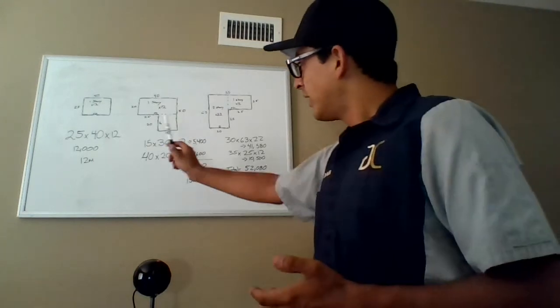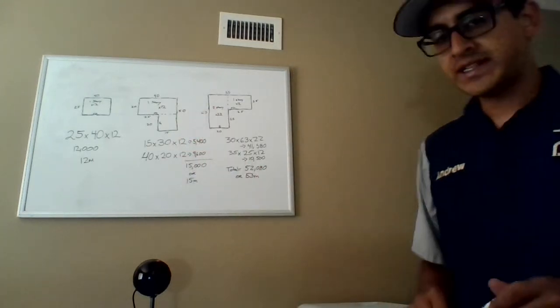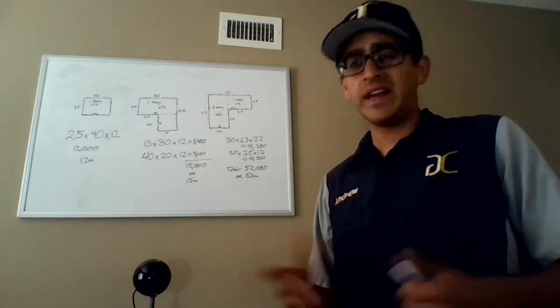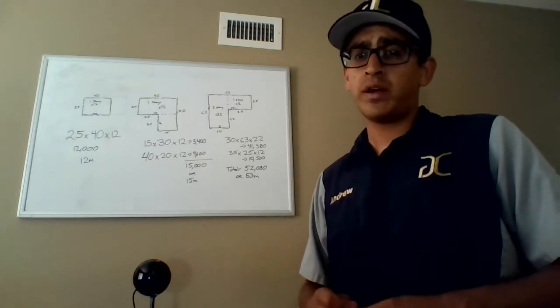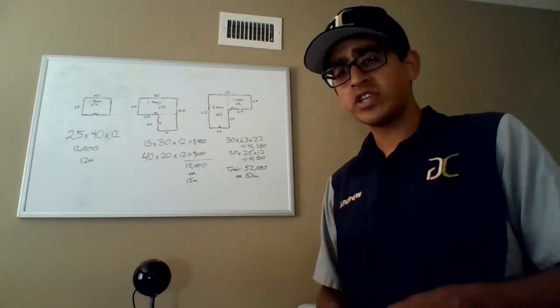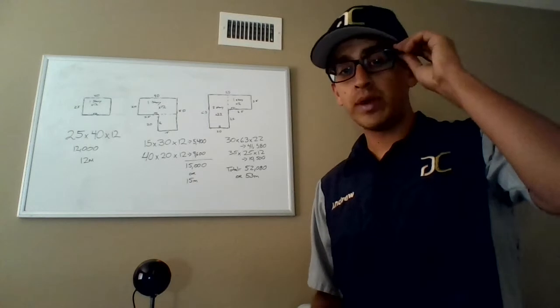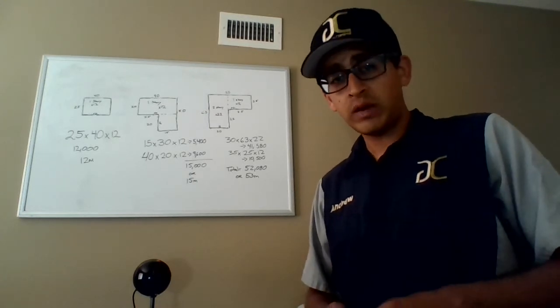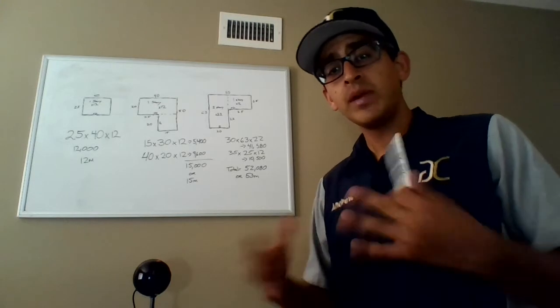So let's jump into the second example. This is going to be very common here in California, an L-shaped home. There is really not a formula to get the volume out of an L-shaped form, but what you can do is break out the house into two different sections, two rectangles. That way you can get the volume of both of them and then add them up together.